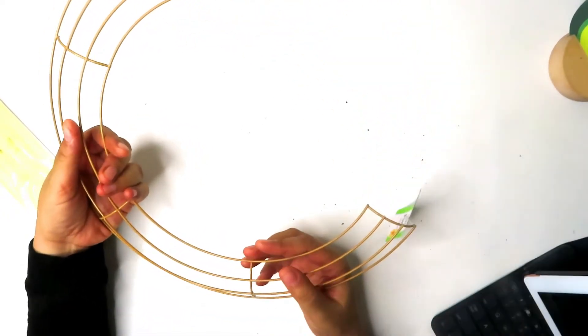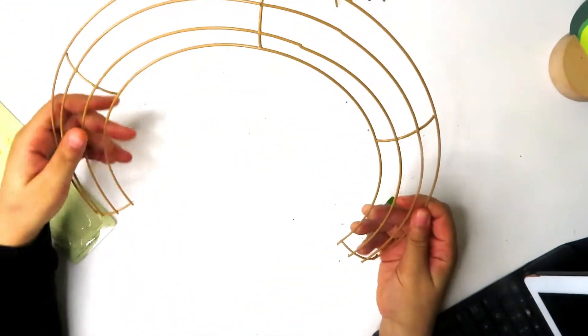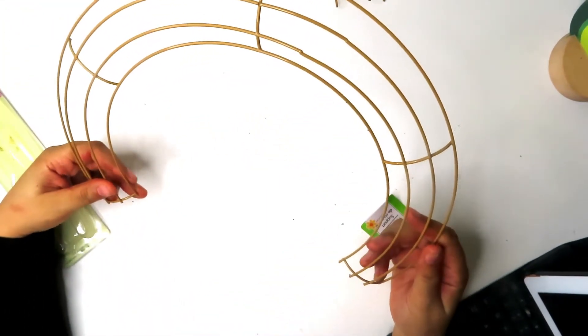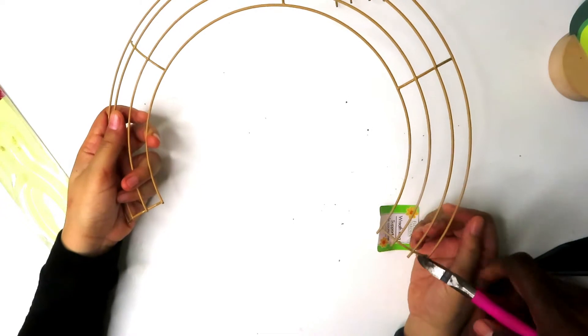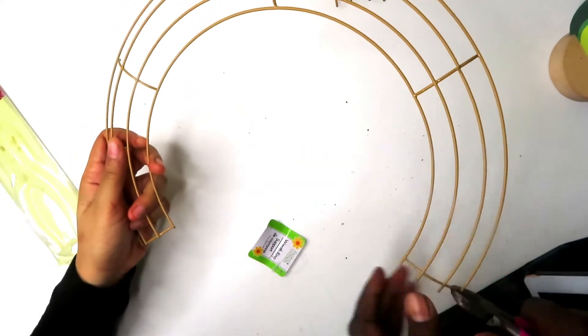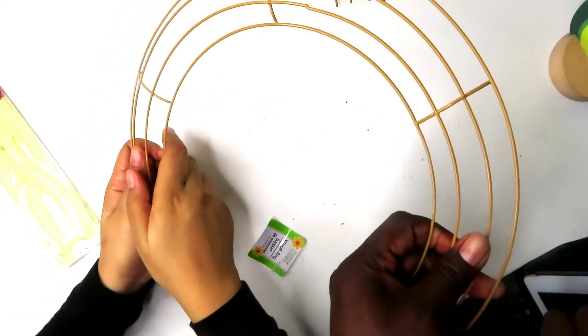Make sure to only cut off two out of the six sections of the wreath form. Cut off any of the little tiny pieces at the end to make sure that your rainbow is as smooth as possible.